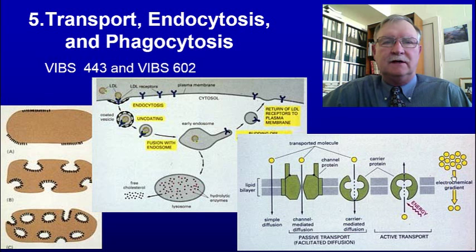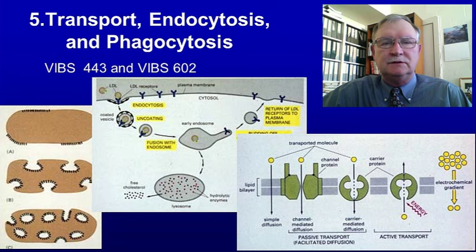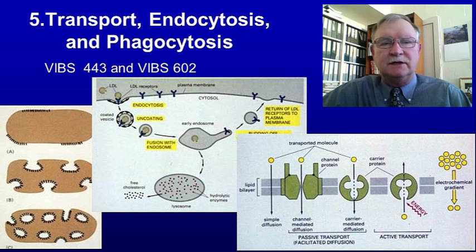Hi, I'm Larry Johnson, a professor at Texas A&M University. Today we're going to talk about transport, endocytosis, and phagocytosis — how things get through the cell membrane. It could be secretions, bacteria being phagocytized, electrolytes, or oxygen and carbon dioxide — different components that need to get into the cell and out of the cell.